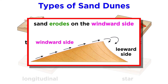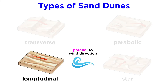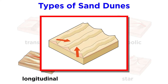In these dunes, sand is eroded on the windward side because the velocity is higher. The sand is transported over the crest and deposited on the steeper leeward, or lee side, where the wind blows more slowly. On the other hand, longitudinal dunes form parallel to the direction of the wind, which is also the direction that the sand is transported. Longitudinal dunes tend to form in areas where there are two dominant wind directions separated by about 90 degrees.